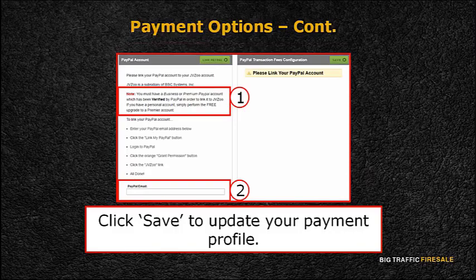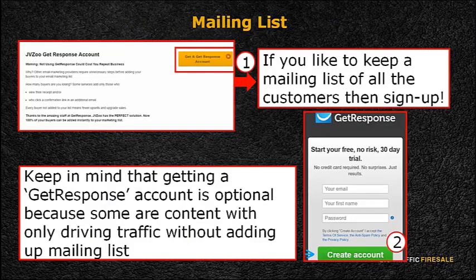You'll need to have a premium or business PayPal account verified by PayPal in order to link it to JVZoo. To do so, you'll need to provide your PayPal email account and follow the instructions given by jvzoo.com. Click Save to update your payment profile.